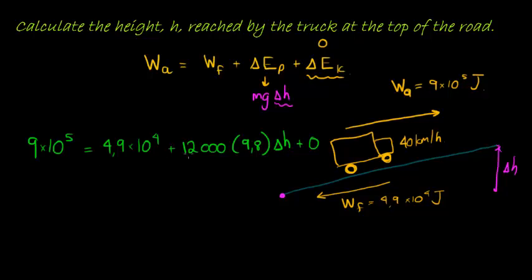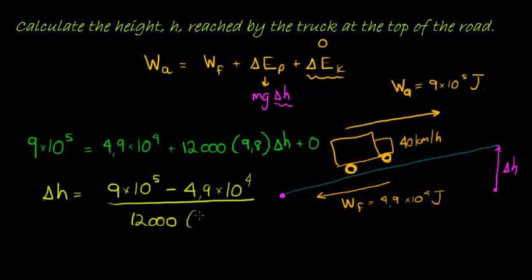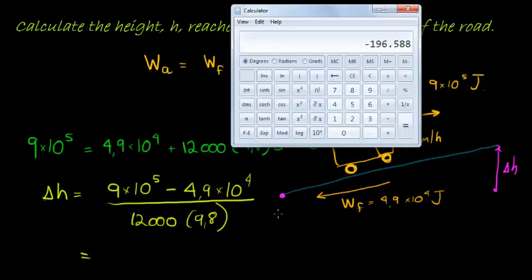Now we get to solve for h. Δh equals (9×10⁵ - 4.9×10⁴) divided by 12,000 and divided by 9.8. That's our formula. Let's see what we get for the change in height.